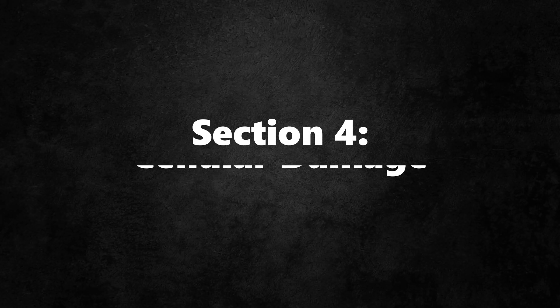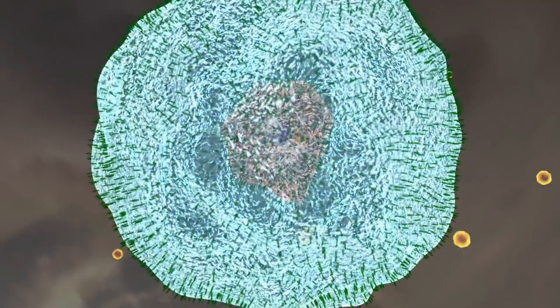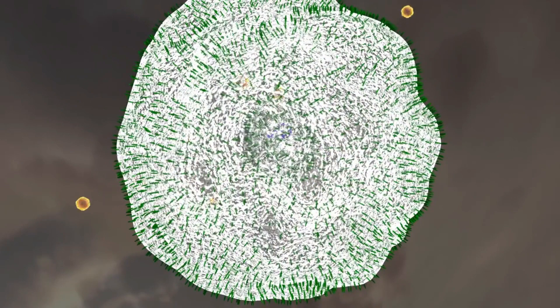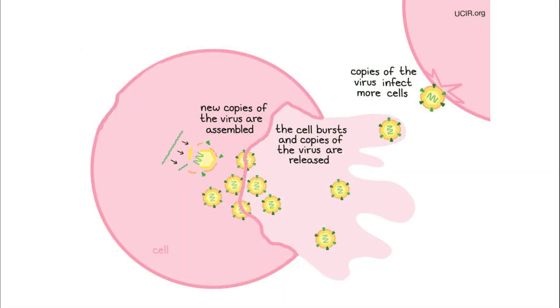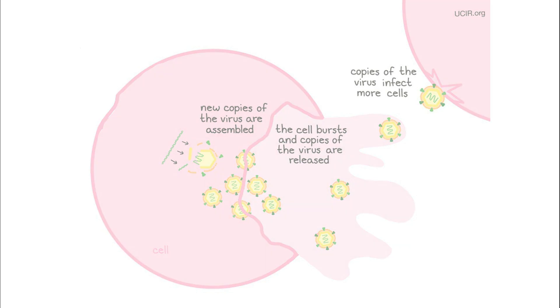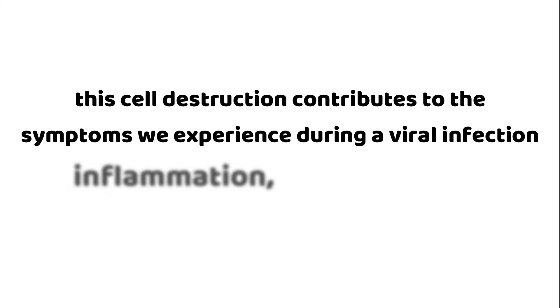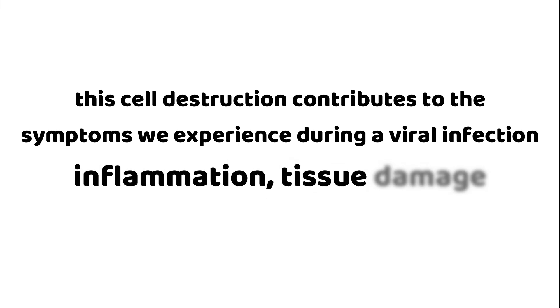Section 4: Cellular Damage. The viral replication process can cause significant damage to the whole cell. Sometimes the sheer number of viruses produced can lead to the bursting of the infected cell, releasing a flood of new viral particles into the surrounding tissues. This cell destruction contributes to the symptoms we experience during a viral infection, such as inflammation, tissue damage, and in severe cases, organ failure.